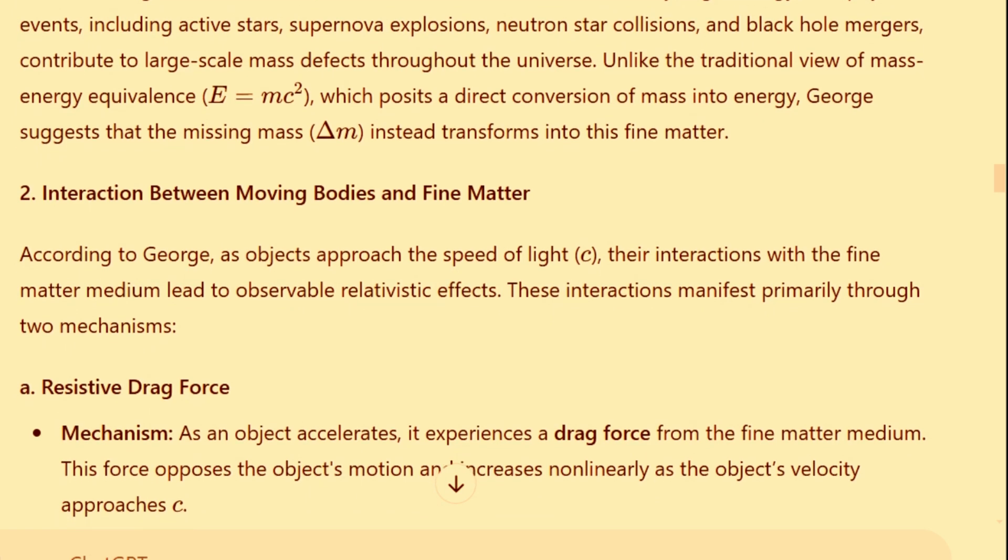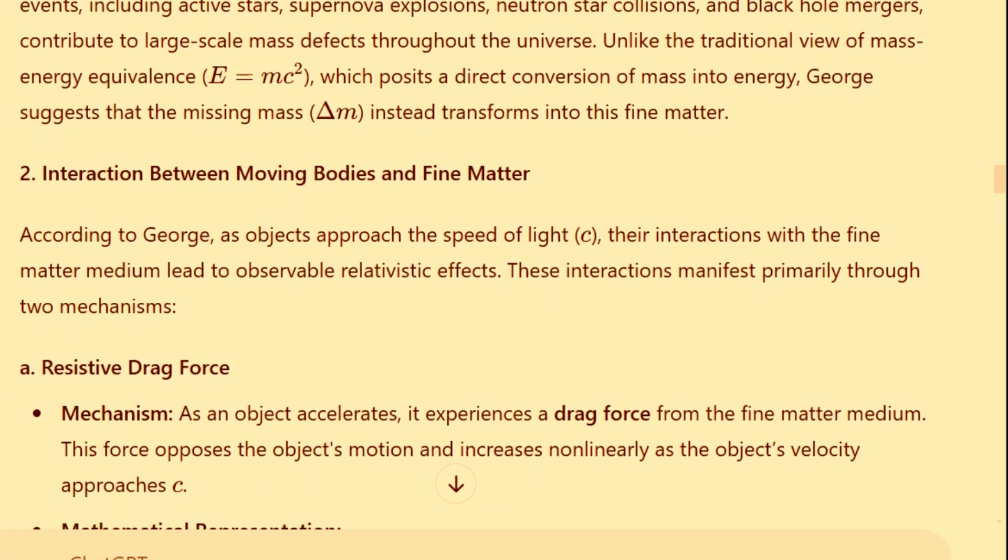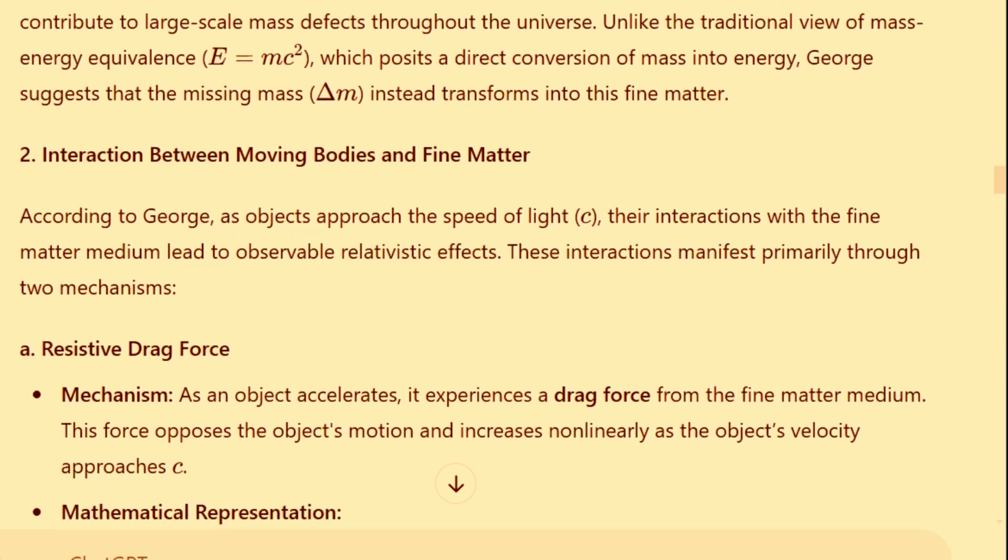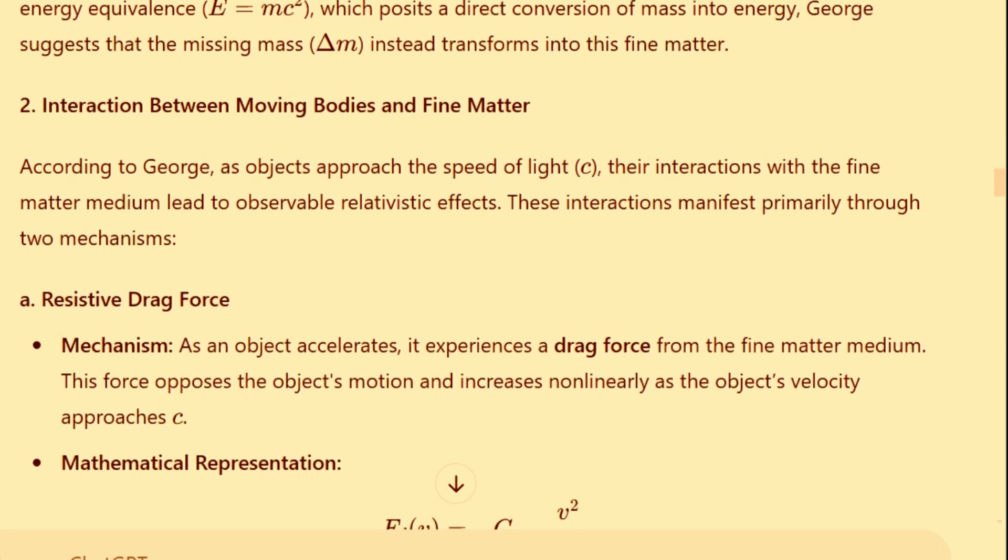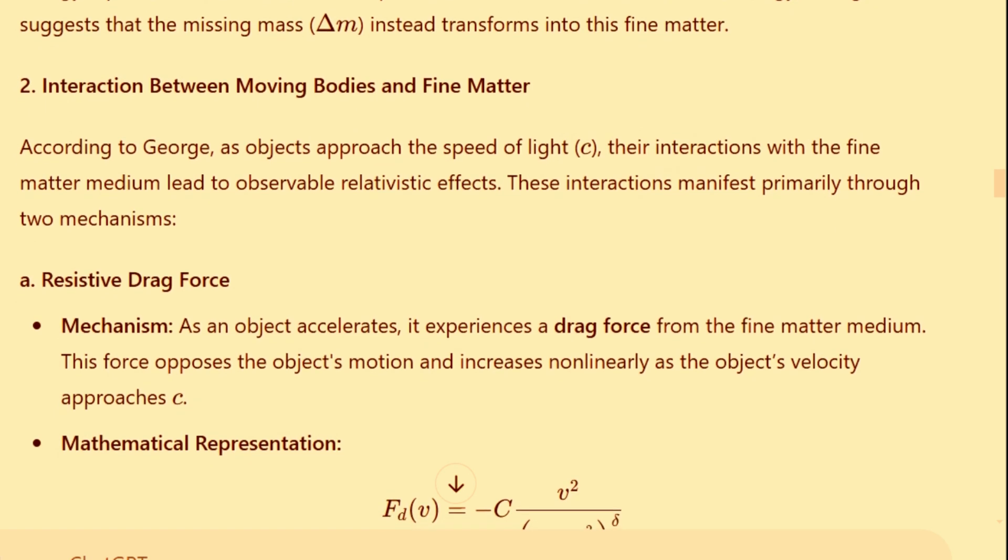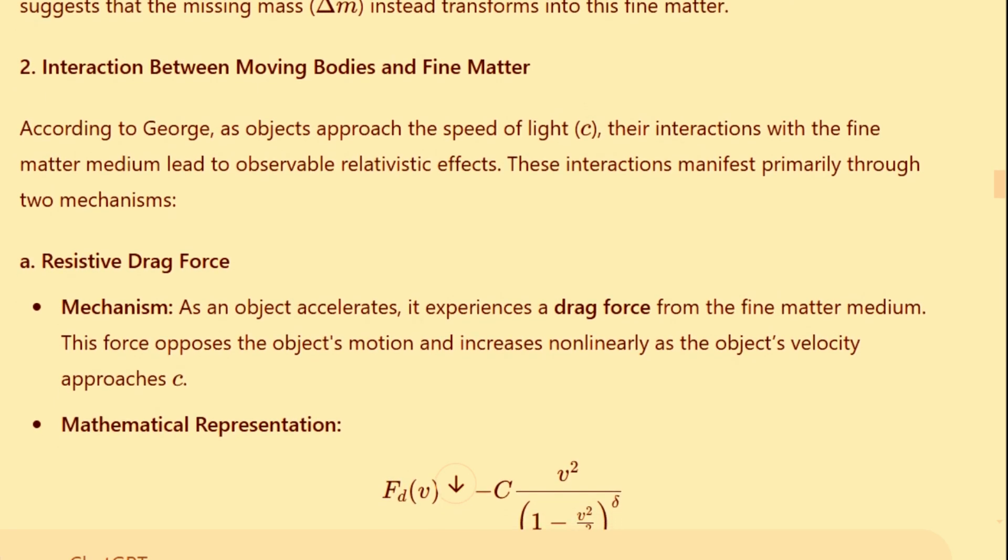In contrast to the traditional view of mass-energy equivalence, often represented by the equation E equals mc squared, where mass is converted directly into energy, George suggests that the missing mass, delta m, instead transforms into this fine matter.